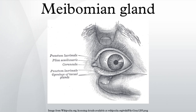Inflammation of the meibomian glands causes the glands to be obstructed by thick waxy secretions. Besides leading to dry eyes, the obstructions can be degraded by bacterial lipases, resulting in the formation of free fatty acids, which irritate the eyes and sometimes cause punctate keratopathy.